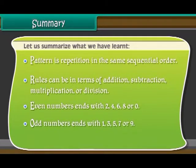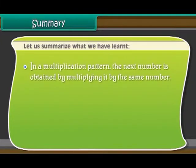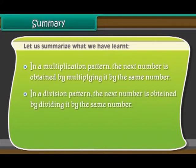...1, 3, 5, 7, or 9. In a multiplication pattern, the next number is obtained by multiplying it by the same number. In a division pattern, the next number is obtained by dividing it by the same number.